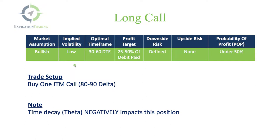You want to do this when implied volatility is low, because an expansion in implied volatility will help your position. The optimal timeframe is always 30 to 60 days to expiration. Profit target is 25 to 50% of what you pay for that call, of the debit paid.